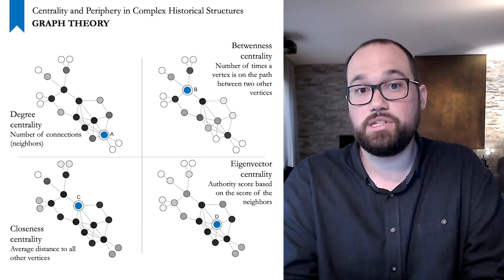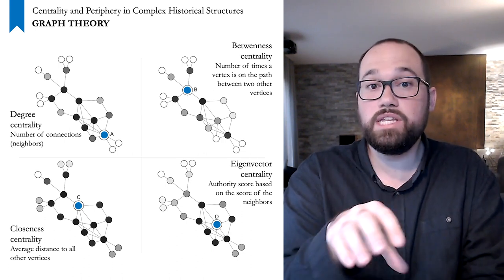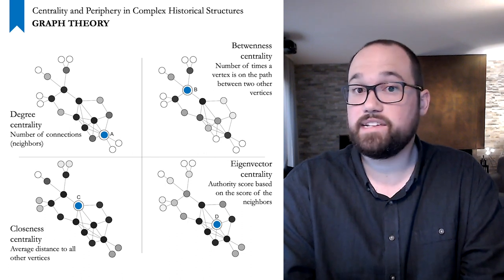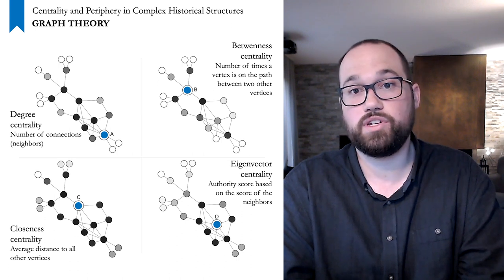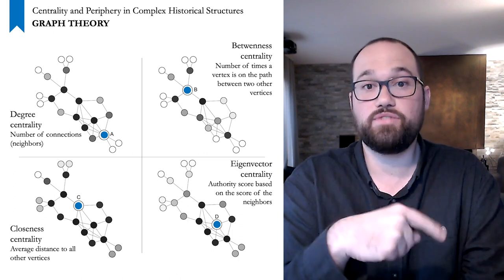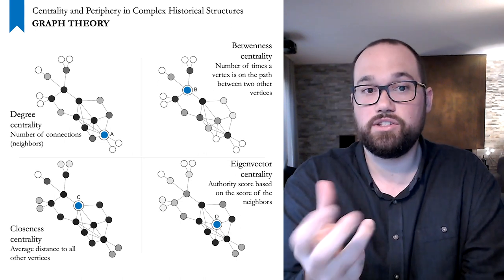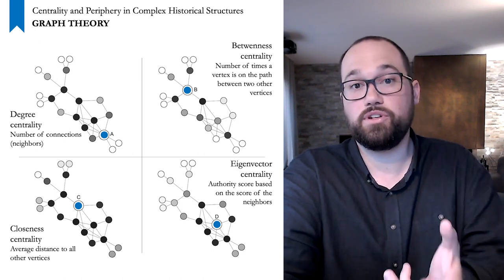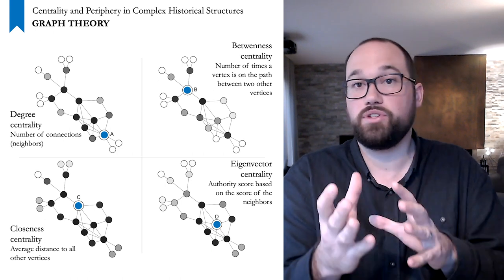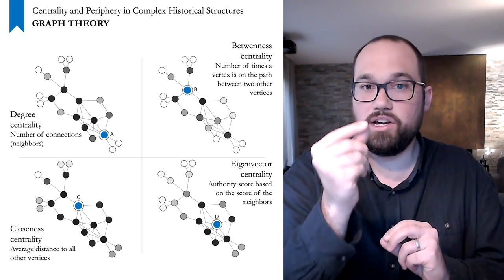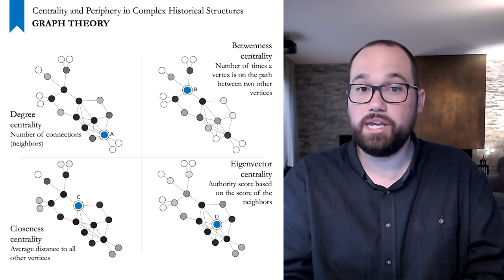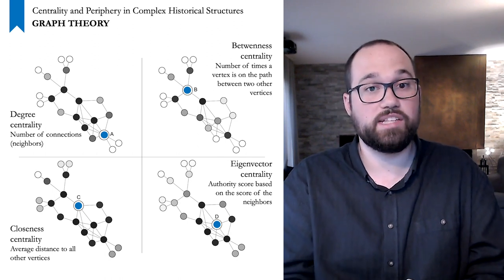Closeness centrality measures how far all vertices are from each other; the one with the smallest average distance is closest to all others on average — here vertex C has the greatest mean proximity. Betweenness centrality detects all shortest paths between vertices and counts how many times a vertex is on the path between two others. The most central individuals by this measure are those who connect different parts of the network — the bridges and information carriers. Here vertex B is most often on the path between all possible pairs. The interpretation we make of this structural information depends on how our data was extracted from historical sources.